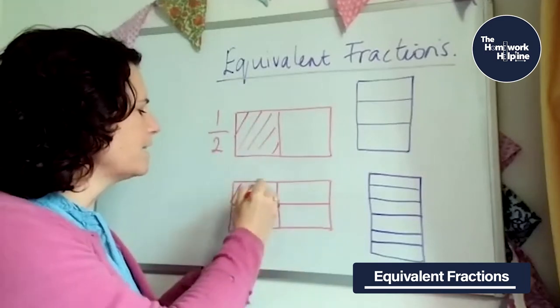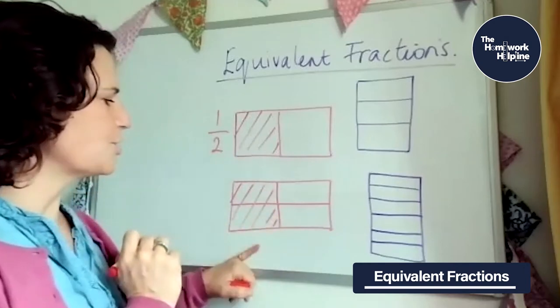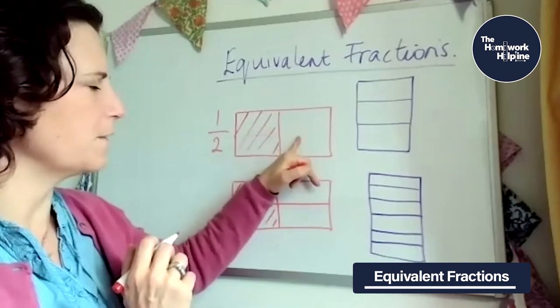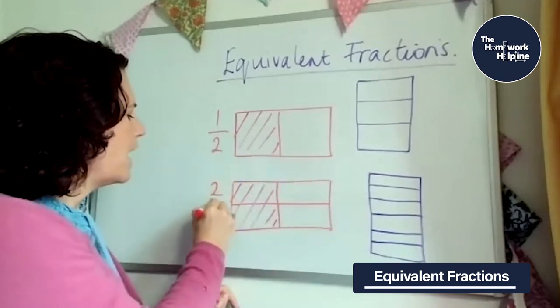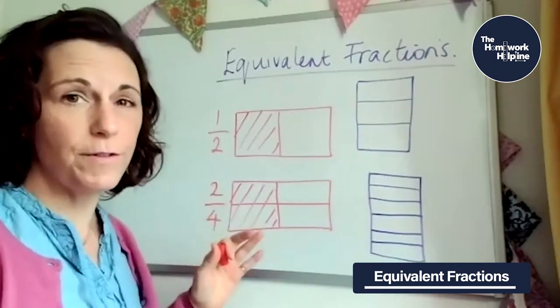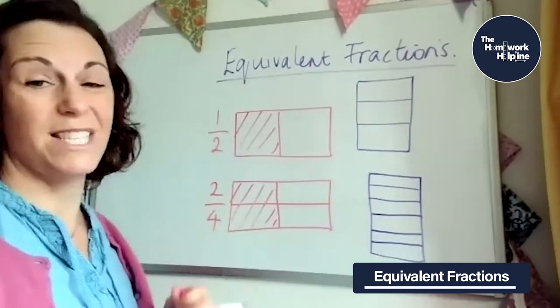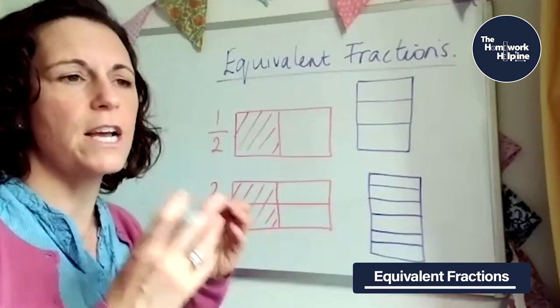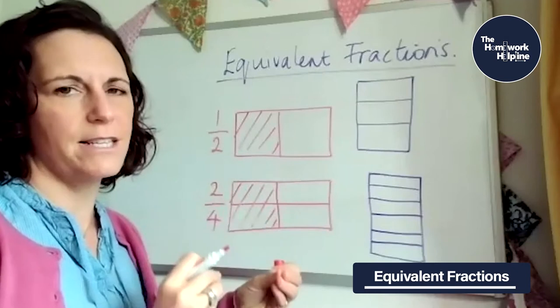So exactly the same amount is shown like that, which instead of being one out of one, one of the equal parts, it's two out of the four equal parts. So one half is equivalent to two quarters, it's equal, it's equivalent, they're exactly the same amount, even though the numbers are different. They actually represent exactly the same amount.